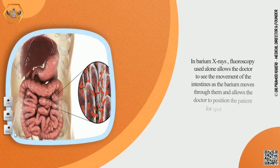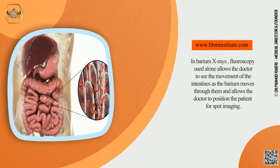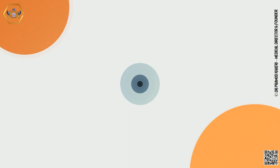In barium x-rays, fluoroscopy used alone allows the doctor to see the movement of the intestines as the barium moves through them, and allows the doctor to position the patient for spot imaging. In cardiac catheterization, fluoroscopy is used as an adjunct to enable the doctor to see the flow of blood through the coronary arteries, in order to evaluate the presence of arterial blockages.